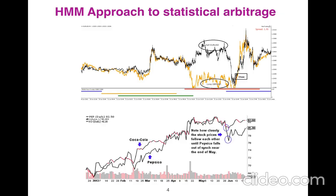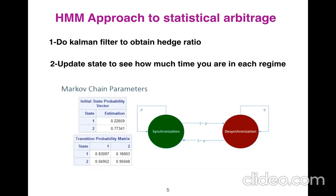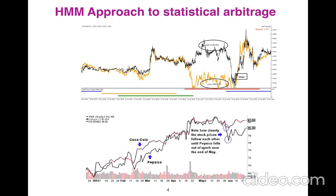We have two examples: EURUSD and GBPUSD. I use Kalman filter to find the hedge ratio, because when we are doing statistical arbitrage, we usually use Kalman filter for that. When the gap is too large, I say it is in a desynchronized state, and when the ratio is good and the errors are small, we are in a synchronized state.